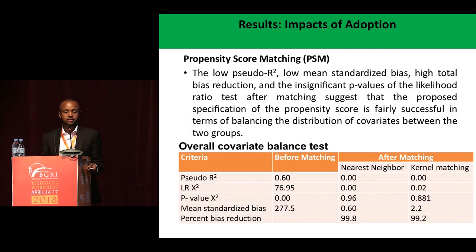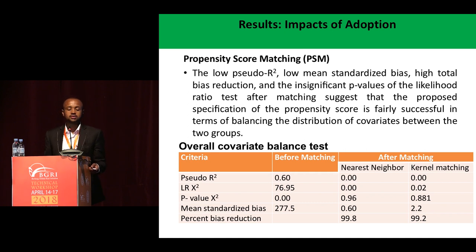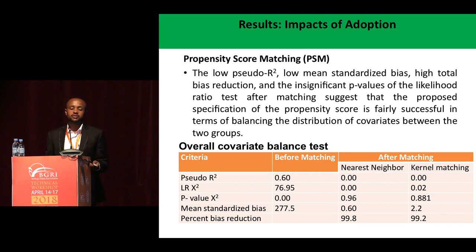We also checked the quality of the matching based on indices shown in the table. This shows a low pseudo R-squared, low mean standardized bias, high bias reduction, and insignificant p-values of the likelihood ratio test after matching. These suggest that the proposed specification of the propensity score is fairly successful in balancing the distribution of covariates between the two groups, so we are now able to estimate the impact of improved wheat varieties without bias.